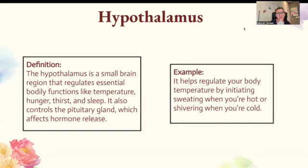Hypothalamus. The hypothalamus is a small brain region that regulates essential bodily functions like temperature, hunger, thirst, and sleep. It also controls the pituitary gland, which affects hormone release. It helps regulate your body's temperature by initiating sweating when you're hot or shivering when you're cold.